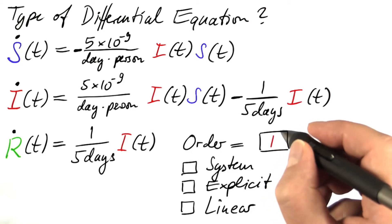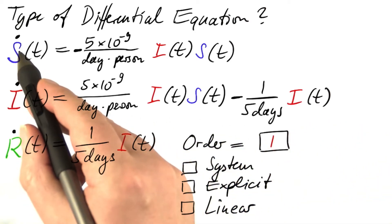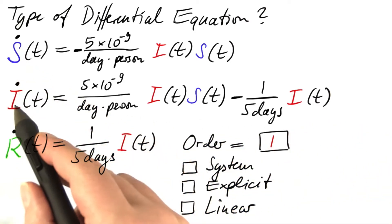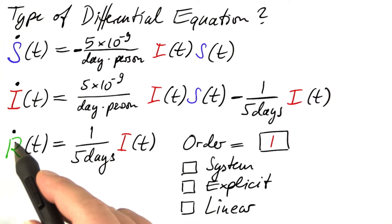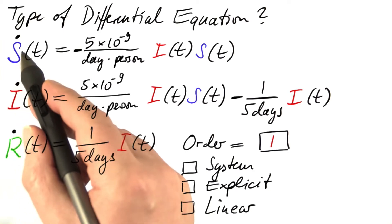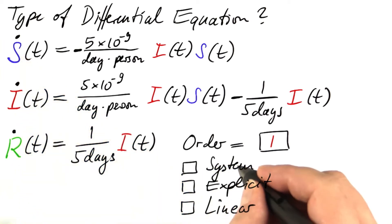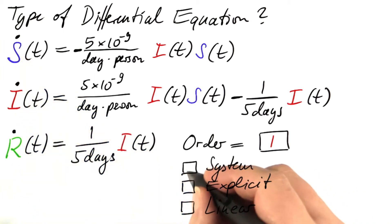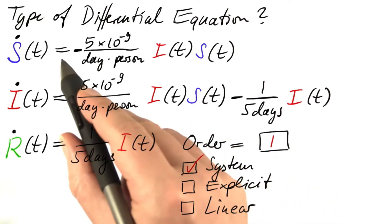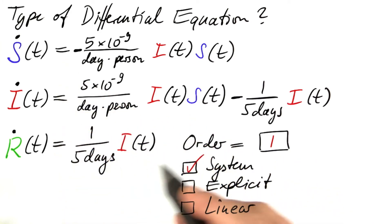The highest derivative is the first one. We have a first derivative, a rate of change, but we do not have a second derivative or a rate of change. Yes, it's a system — we have several equations in parallel.